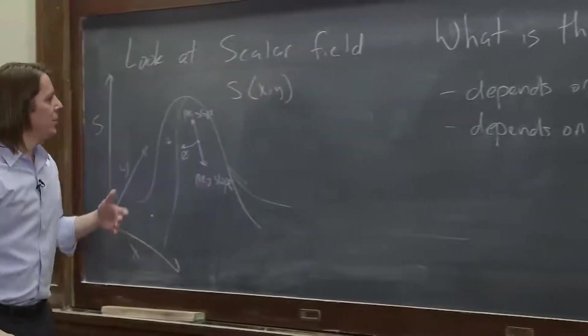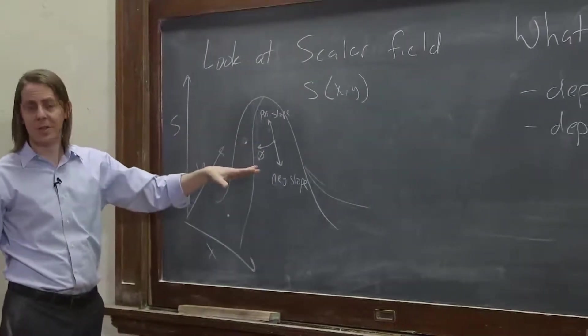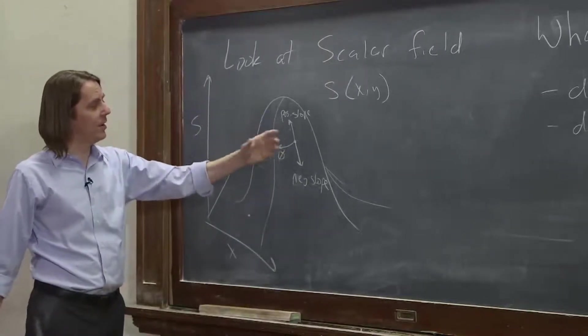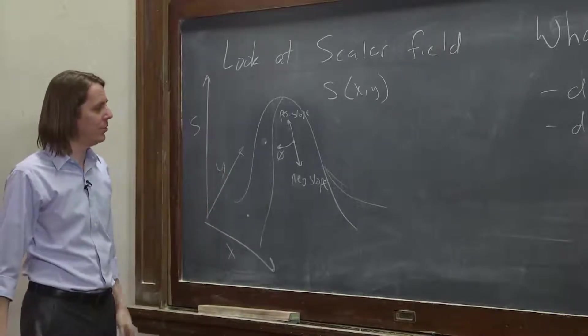So you actually have the case that your derivative of this 2D scalar field is a vector field. Anywhere you go, it has a vector, but you have to think in terms of a vector. The value depends on the direction you're looking.